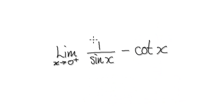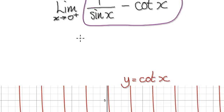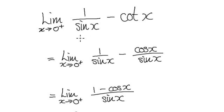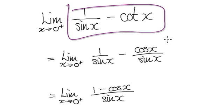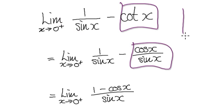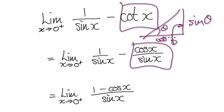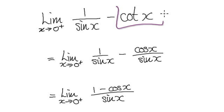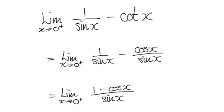The trick we would use is to turn this whole thing into one fraction. Visualize cotangent of x as cosine over sine — remember tangent is sine over cosine, so cotangent is cosine over sine. With the same denominator, we can merge the two terms into one fraction.